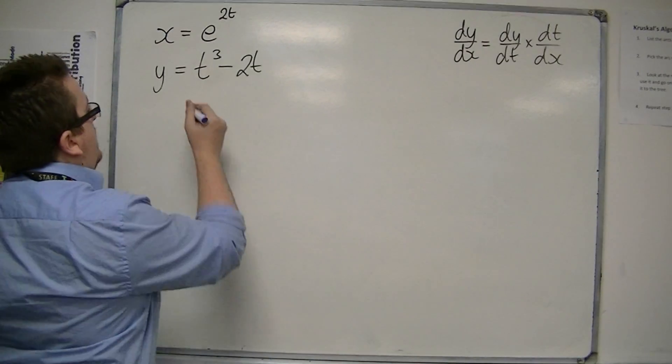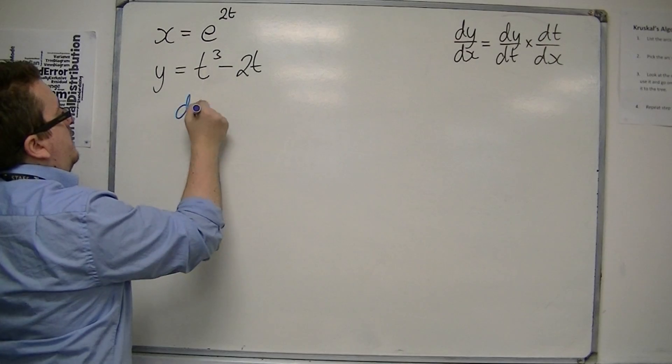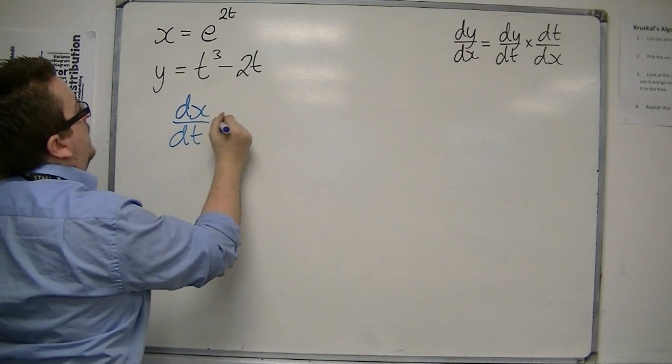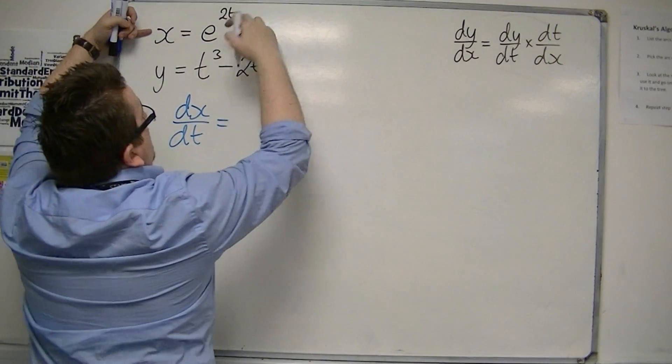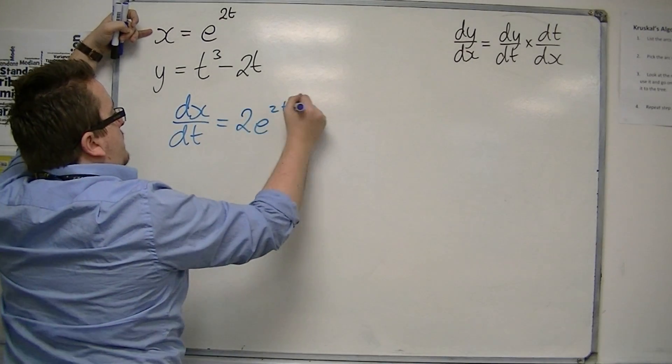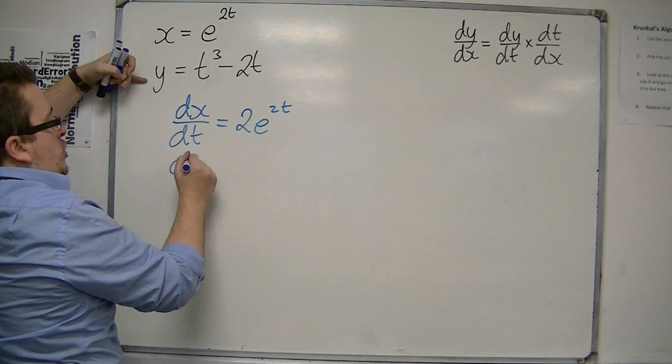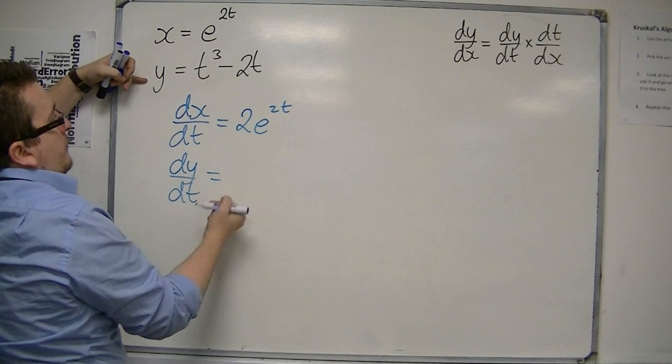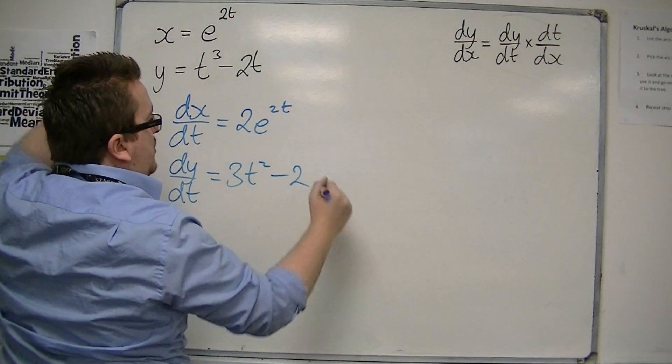I need to find dy/dt and dx/dt. So dx/dt first is the derivative of e to the 2t, which is 2e to the 2t. And if I differentiate y, I get 3t squared, take away 2.